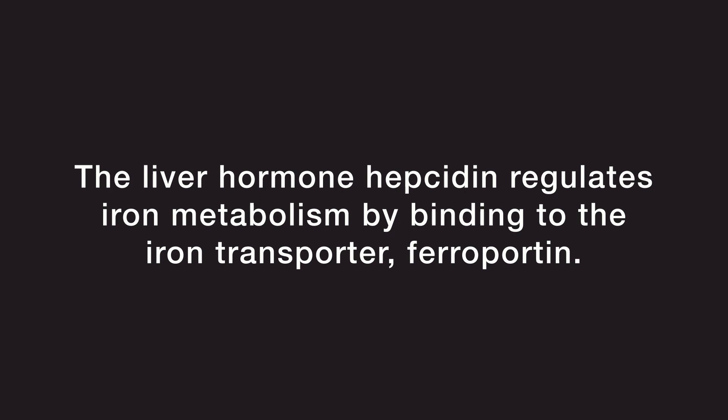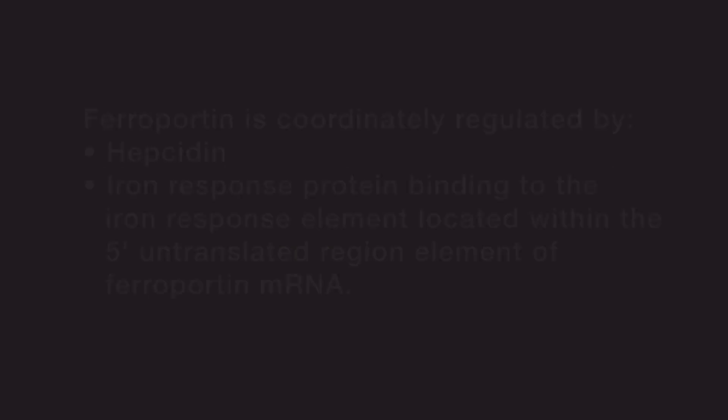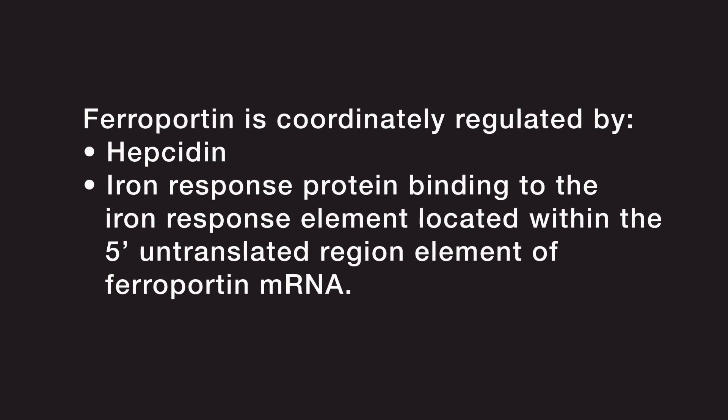In summary, the liver hormone hepcidin regulates iron metabolism by binding to the iron transporter ferroportin. Ferroportin protein levels are coordinately regulated by its destruction initiated by hepcidin binding and by its post-transcriptional regulation via the iron response protein binding to the iron response element. The video Regulation of Intracellular Iron Homeostasis reviews this process.